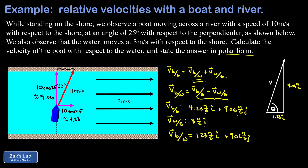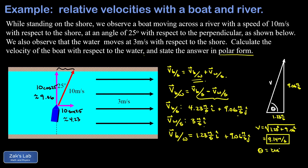To get the magnitude I use the Pythagorean theorem: the square root of 1.23² + 9.06², which gives a speed of 9.14 meters per second. Then I use the inverse tangent function to find the angle — it's the angle whose tangent is 9.06